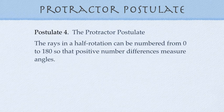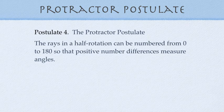So postulate 4 is the protractor postulate. And because protractor typically carries a half rotation, it's a half circle, then the rays in a half rotation can be numbered from 0 to 180 so that positive number differences measure angles. Now, in the ruler postulate, we said you can put any ruler you want. You can use metric, you can use English, you can use astronomical units. But in the protractor postulate, we're talking about 360 degrees in a circle, so 180 degrees in a half circle.